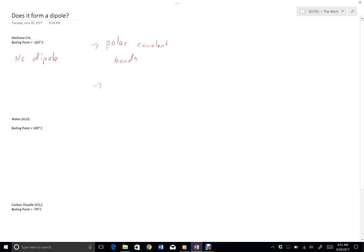And then we need an asymmetric shape. So for polar covalent bonds, we check the electronegativity difference, keeping in mind that it needs to be from 0.5 to 1.7.